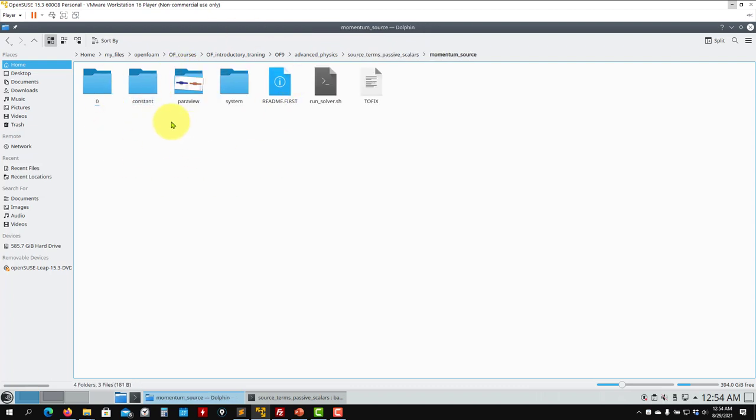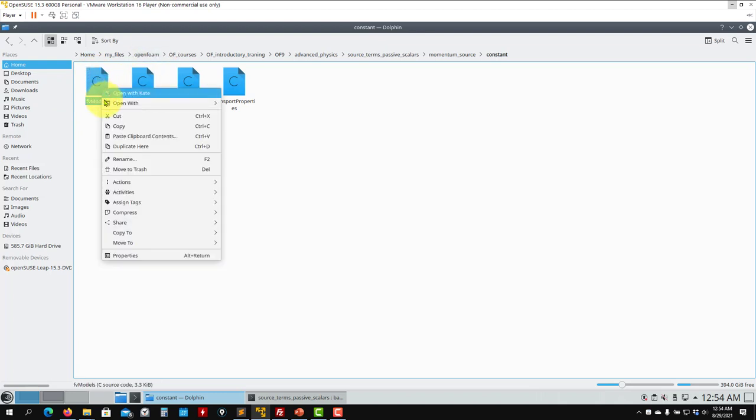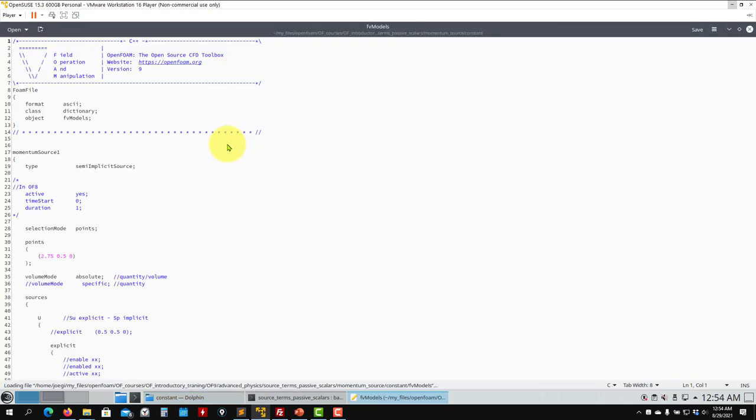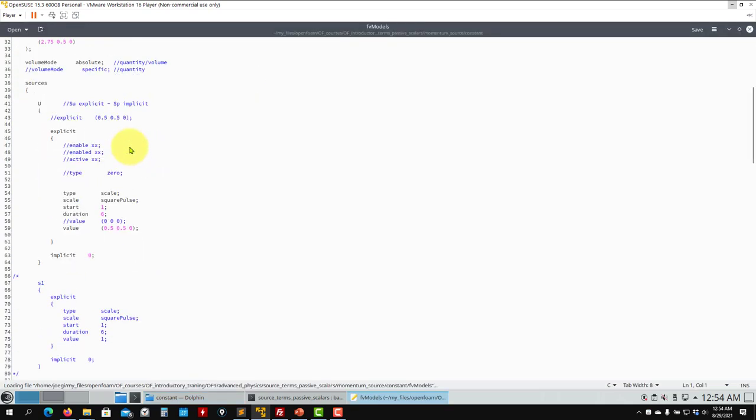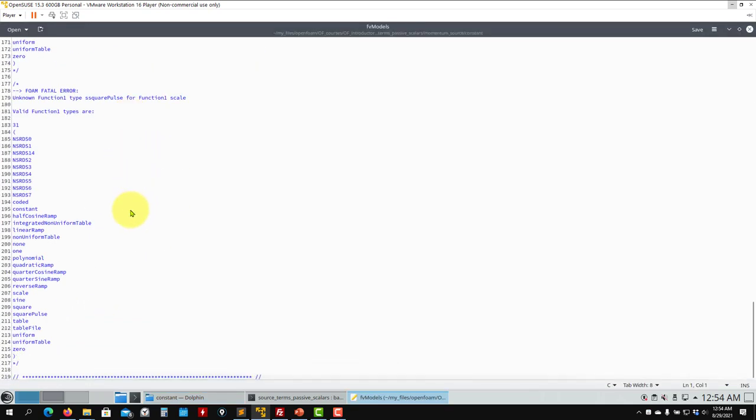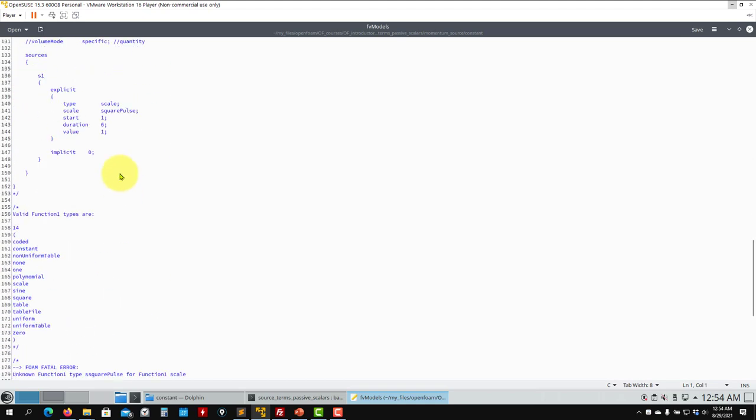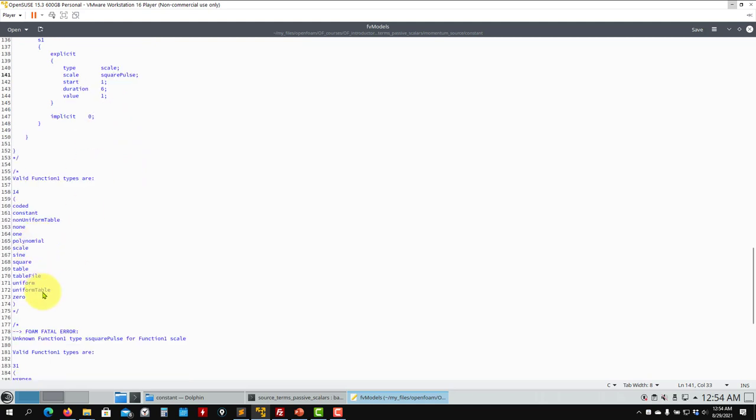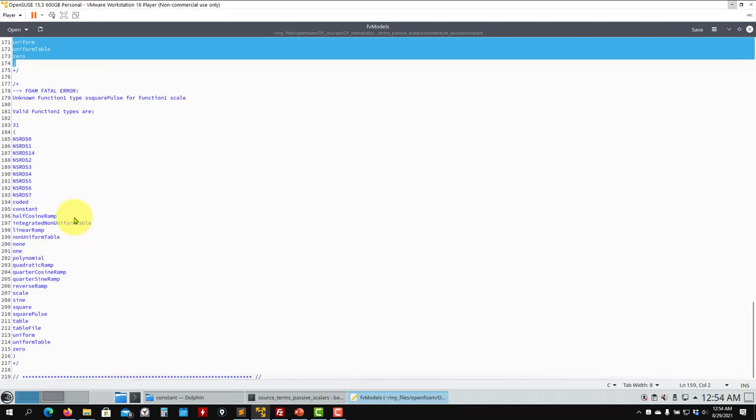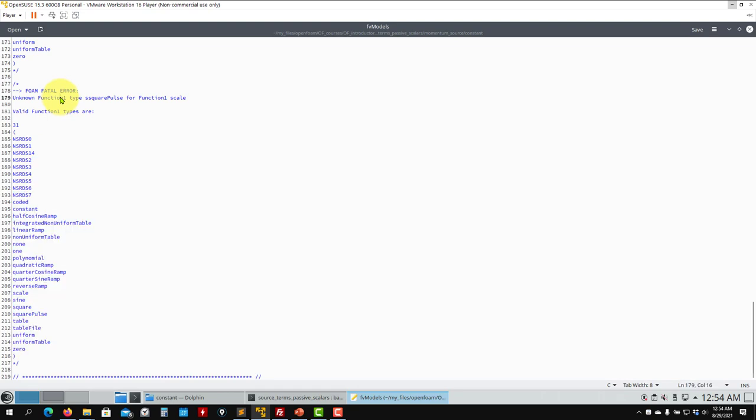As you go into your tutorials, momentum source, see that you have your classical directory structure. The only thing that I'm going to open here will be constant. See that you have fvModels. This was in previous version of OpenFOAM fvOptions, that's all. This is the only new one that we have and here you do your definition.